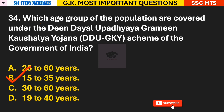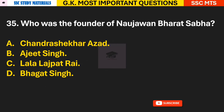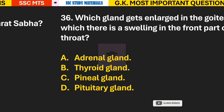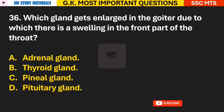Answer to Q34: B — 15 to 35 years. Question 35: Who was the founder of Naujawan Bharat Sabha? Answer D — the founder of Naujawan Bharat Sabha was Bhagat Singh. Question 36: Which gland gets enlarged in goiter, causing swelling in the front part of the throat? Answer B — the thyroid gland.